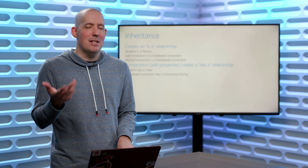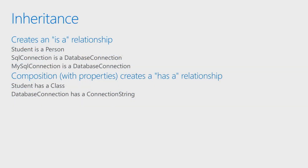What inheritance is, is a generalization-specialization relationship. What I'm going to do is create an is-a relationship. So if we take a look at the first example: student is a person. Person is very general — that's you, that's me, we're all people. Student is going to be a specific type of person, so it's a specialized person.